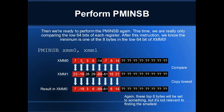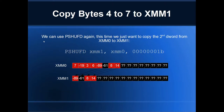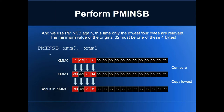Once we've performed that shuffle, we've got another 8 pairs of bytes to compare, so we compare XMM0 with XMM1 using PminSB again. We just alternate between PminSB and these shuffling instructions to set up more pairs to compare. After this PminSB, we end up with 8 bytes in XMM0, and we know the smallest byte from the original 32 must be one of these 8. Then we shuffle again — this time just 4 bytes — using PshuffD once more, then perform another PminSB. We just keep halving the number of comparisons each time.